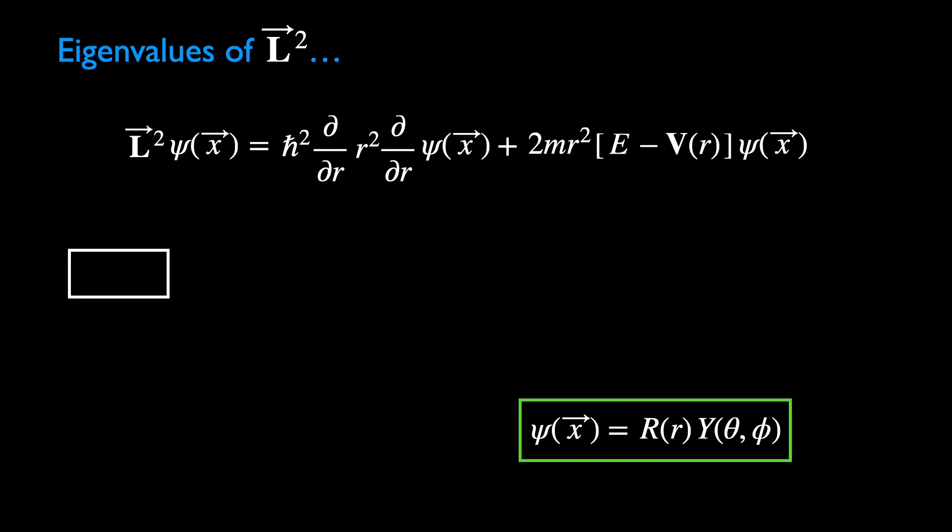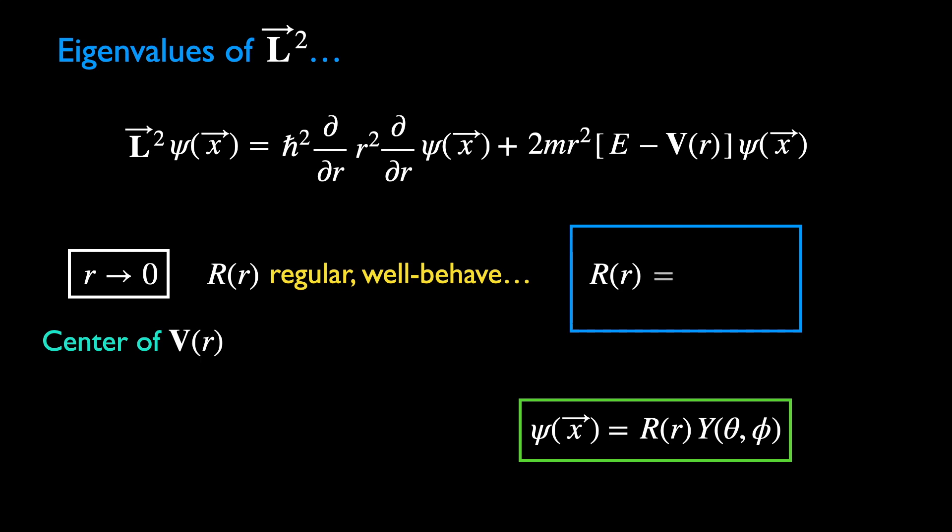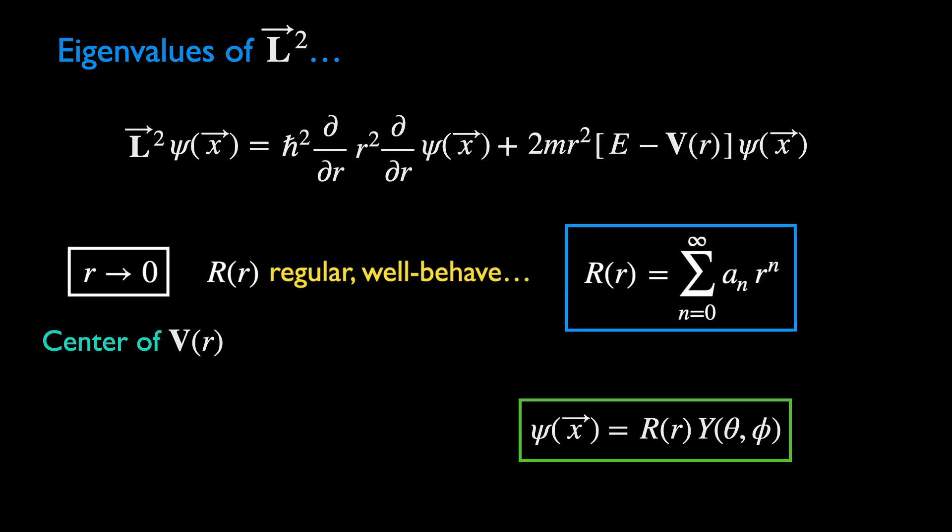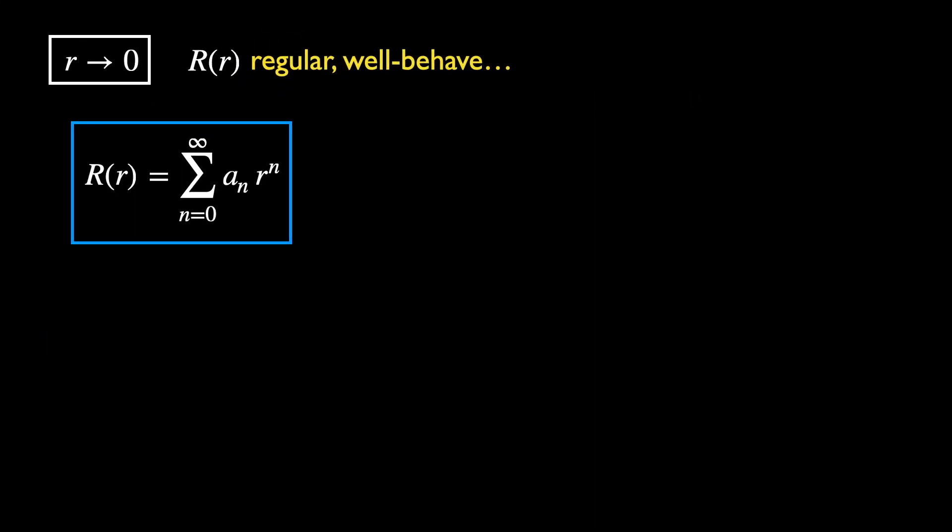We go to the region near the center of the potential, where r approaches 0. We assume that the radial function capital R is regular and well behaved in this region. This just means it could be expressed as a power series.